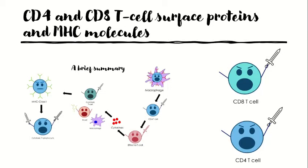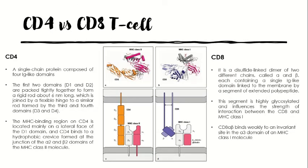Looking at the CD4 and CD8 T cells in more detail: CD4 is a single-chain protein composed of four Ig-like domains. The first two domains, D1 and D2, are packed tightly together to form a rigid rod of about 6 nanometers, joined by a flexible hinge to a similar rod formed by D3 and D4. The MHC binding region on CD4 is located on the lateral face of the D1 domain, and CD4 binds to the hydrophobic crevice formed at the junction of the alpha 2 and beta 2 domains of MHC class 2 molecules.